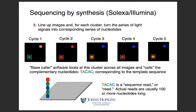When we get these images, we need to translate these colored circles into the actual base-called sequence. The software that does this is called a base caller — it takes these images, does feature detection to figure out where the clusters are and how they correspond across the different cycle images, then looks at the color to predict what that base was. In this example with a five-base-pair read, we captured five images across five cycles and translated that into the complementary sequence TACAC. This goes into a FASTQ file — what we call the sequencing read. For real sequencing data, it's usually around 100 nucleotides for the Illumina sequencer.